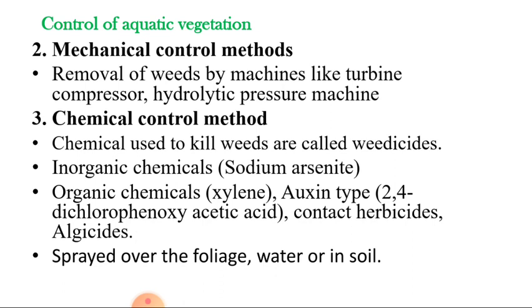The weedicides used should not pollute the aquatic ecosystem and should be cheap and easily available in the market. There are various chemicals used as weedicides, including inorganic chemicals like sodium arsenite, organic chemicals like xylene, growth-type regulators like 2,4-D (2,4-dichlorophenoxyacetic acid), contact herbicides, and algaecides. Weedicides are sold in the market under different trade names and may be spread over foliage, water, or soil.